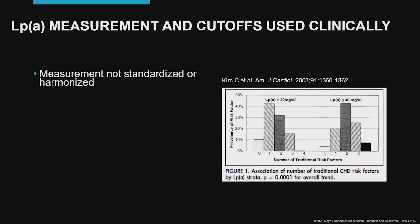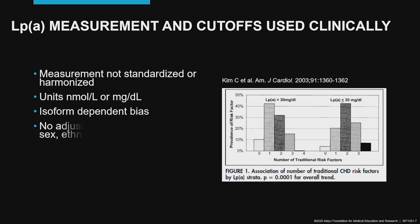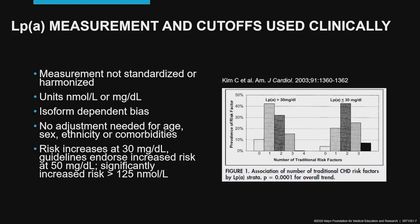Some assay-related issues and cutoffs that we use clinically: first, the measurement is not standardized nor harmonized. We use either nanomole per liter or milligrams per deciliter. There is an isoform-dependent bias. There is no need to do adjustments for age, sex, ethnicity, or comorbidities. We know that the risk starts to increase at 30 milligrams per deciliter; the current guidelines endorse an increased risk at 50 milligrams per deciliter. There is significantly increased risk when the value exceeds 125 nanomole per liter.